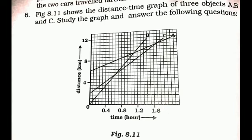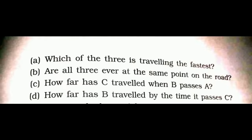Moving ahead to the next numerical: observe figure 8.11, which shows the distance-time graph of three objects A, B, and C. Study the graph and answer the following questions. Please make the diagram first, then it will be easy to solve. We are to find: which of the three is travelling the fastest; are all three ever at the same point on the road; how far has C travelled when B passes A; and how far has B travelled by the time it passes C.